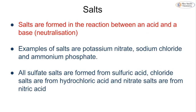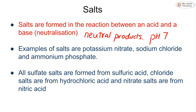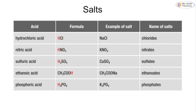A salt is formed in the reaction between an acid and a base, or in a neutralization reaction, so these are going to be neutral products which means they're going to have a pH of 7. Examples of salts are potassium nitrate, sodium chloride and ammonium phosphate. The type of salt we make depends on the acid used: we make sulfate salts from sulfuric acid, chloride salts from hydrochloric acid, and nitrate salts from nitric acid. Ethanoic acid is only for triple students, and phosphoric acid to make phosphate salts may come up but is less likely in the exam.